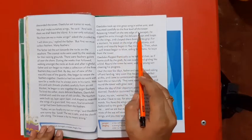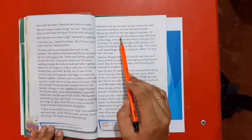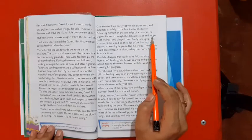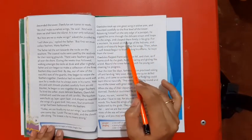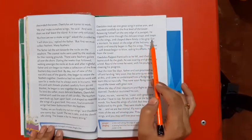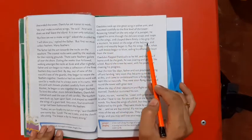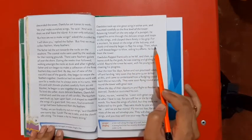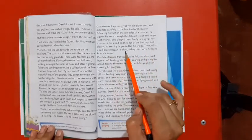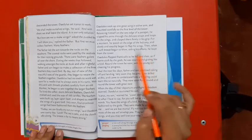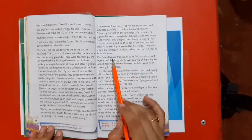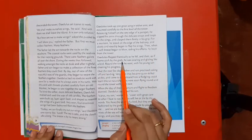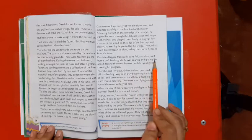Balancing himself on the very edge of the parapet, he slipped his arms through the delicate straps and loops on the wings and clasped them firmly in his grip. For a moment he stood on the edge of the balcony and slowly and steadily began to flap his wings. Then, when a soft breeze began to blow aiding his efforts, he leapt from the tower. Daedalus flapped frantically as he fell, and then, as if borne aloft by the gods, he was soaring and gliding like a bird.